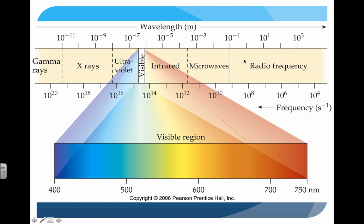Radio waves are what you listen to on the radio. Microwaves include microwave ovens as well as the signals sent to your cell phones. Infrared is used for things like remote controls. UV light is something we protect ourselves from — it's one of the harmful rays from the sun. X-rays are manufactured with certain metals; you can energize them and they give off X-rays. And then gamma rays, also known as cosmic rays, are at the far end of the scale.